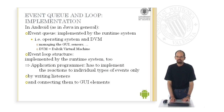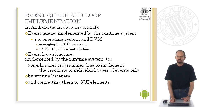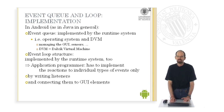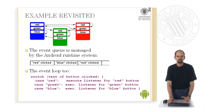In Android, as in Java in general, this event queue is implemented by the runtime system together with the Dalvik virtual machine and the operating system. These two manage the graphical user interface, sensors, and so on. The structure of the event loop is also implemented by the runtime system. So you as the programmer have only to implement the reaction to individual events themselves. You know how to do this — you write listeners and connect them to elements of the graphical user interface, for example buttons or text fields.